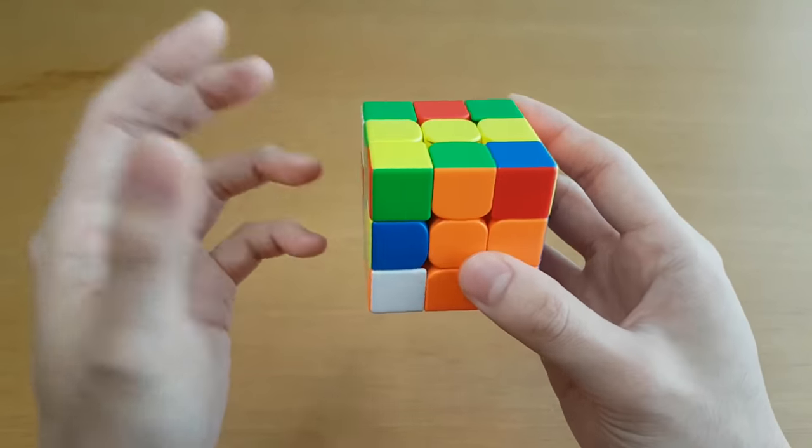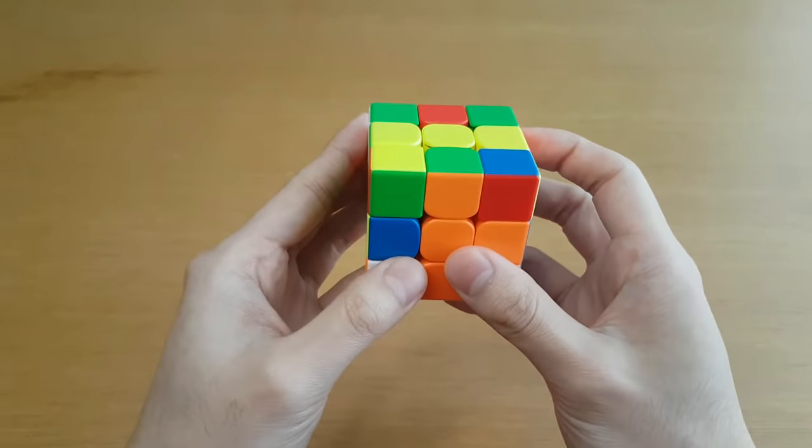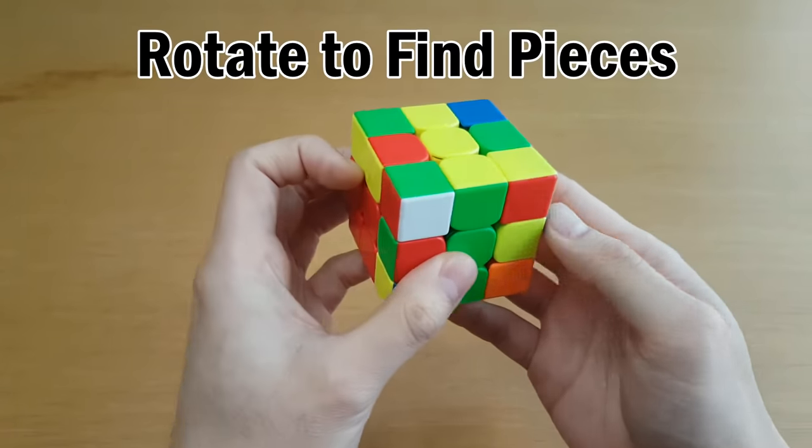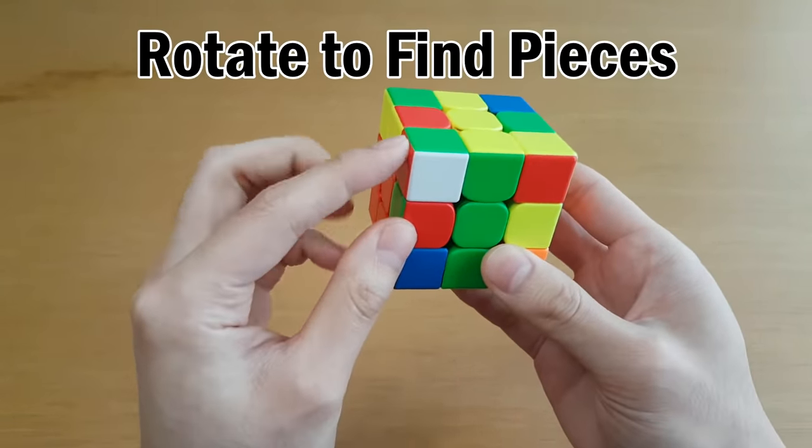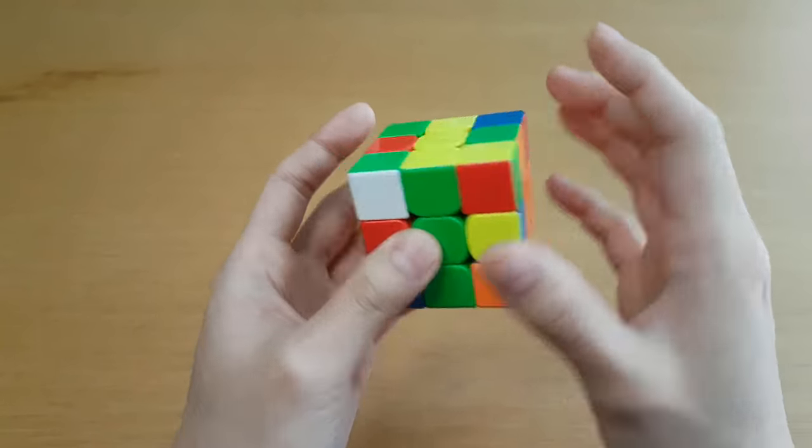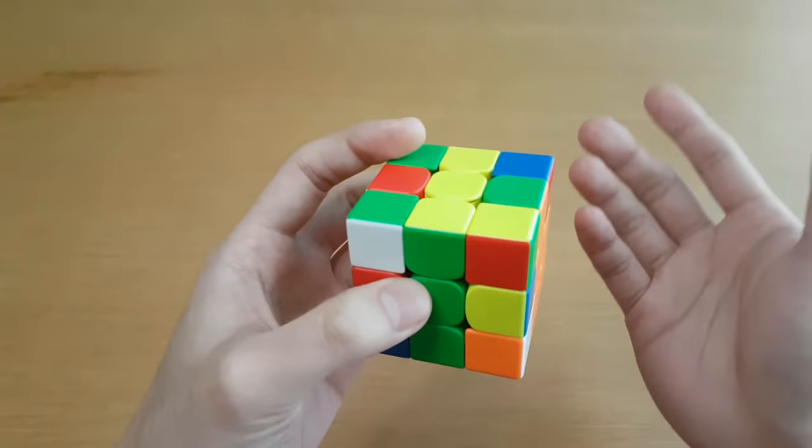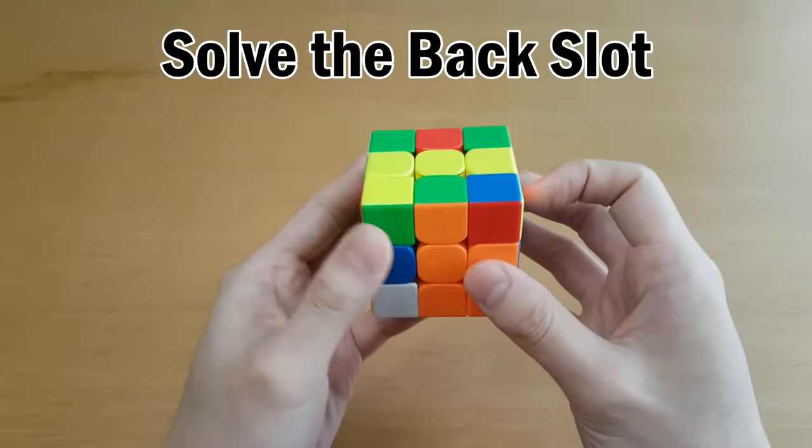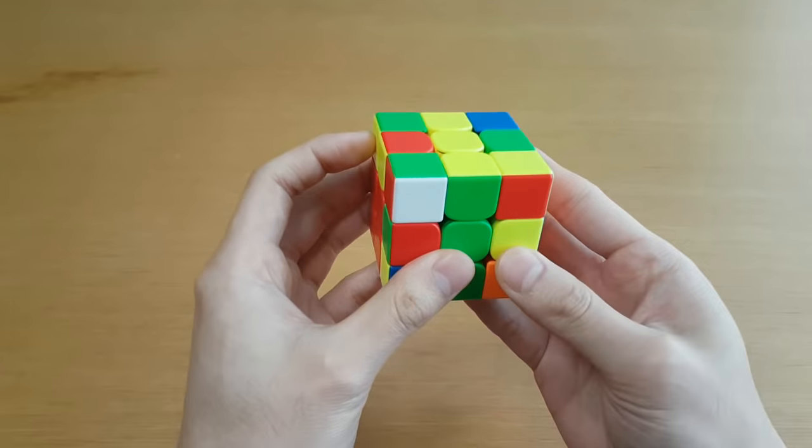So sometimes we break this rule, and this usually happens near the end of F2L where instead you want to rotate to find pieces. In this case, if I rotate this way, I have more visible pieces. When you first learn about which way to rotate, it can be hard to think about all the nuances. So start with the simple rule of inserting into back slots, and once you're used to that, you can start thinking about when to break that rule.